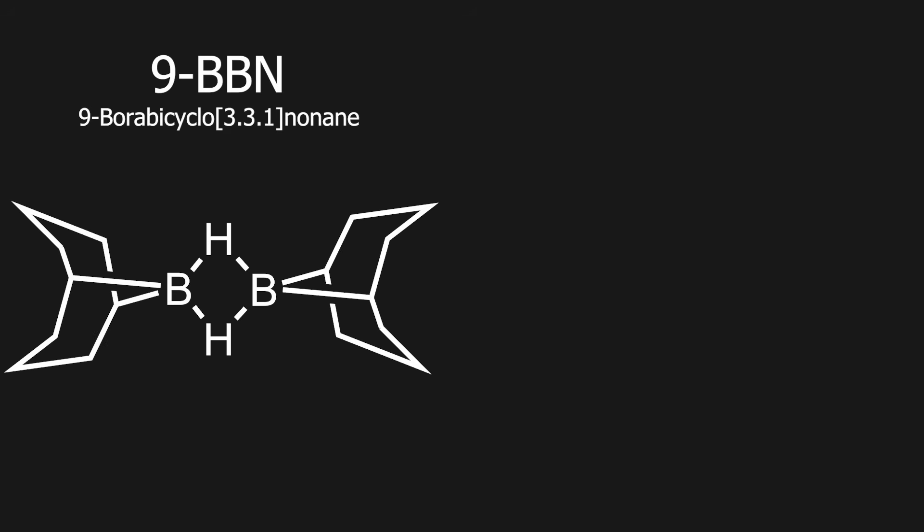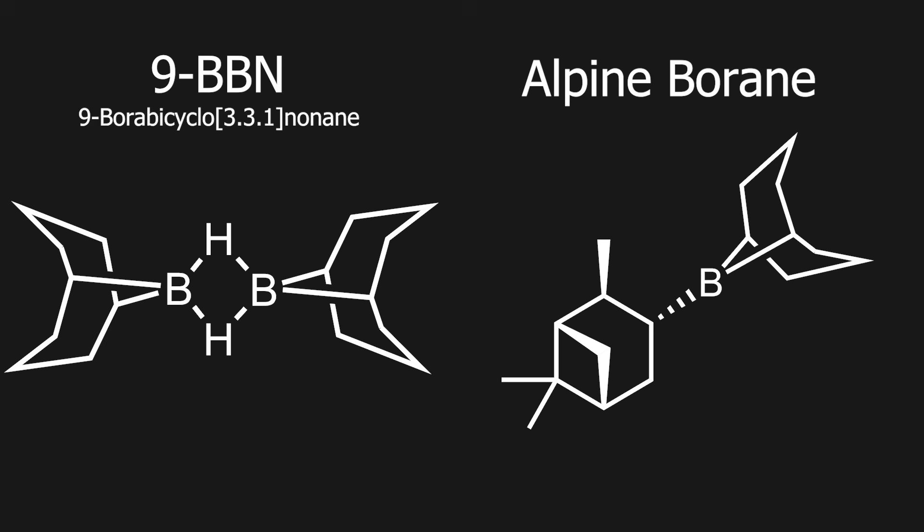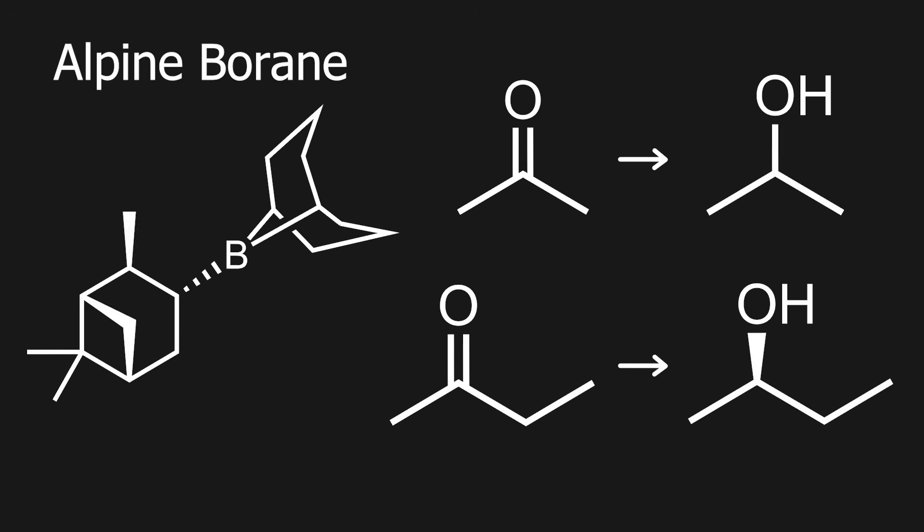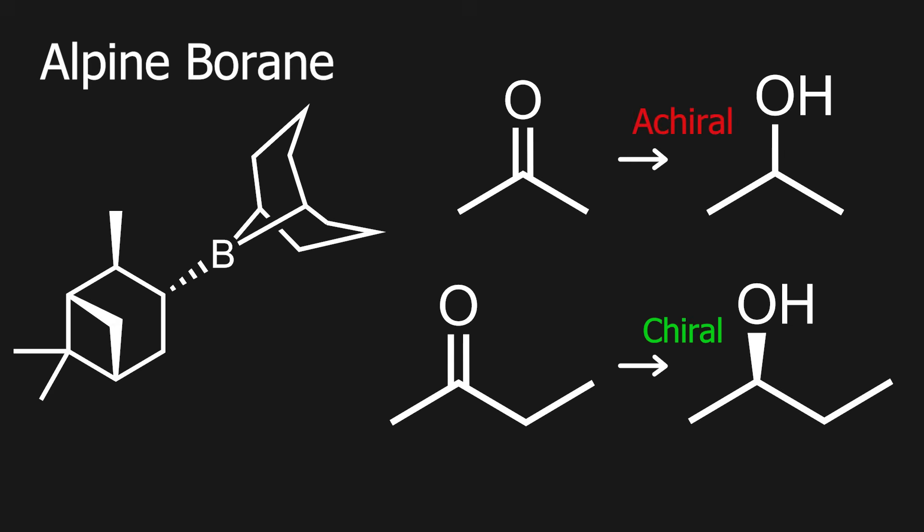9BBN can also react with alpha-pinene to make alpine borane, which is a stereoselective reducing agent for ketones. The reduction of a ketone to an alcohol can produce a chiral center. If that is the case, alpine borane is able to favor either the R or S configuration.